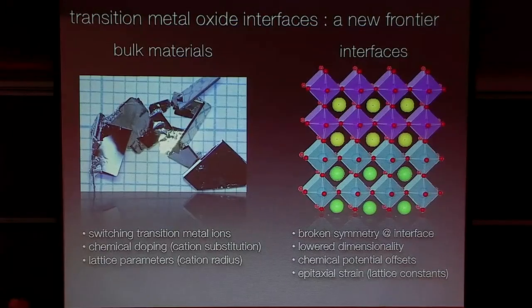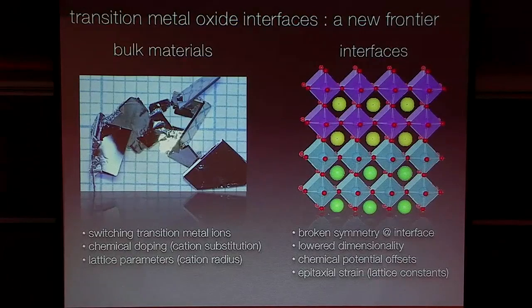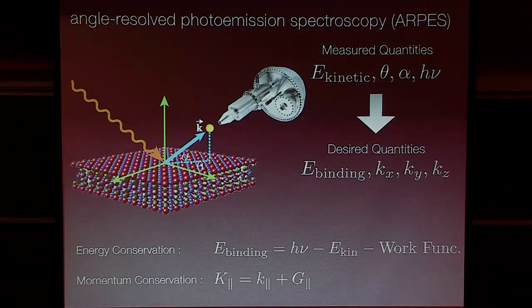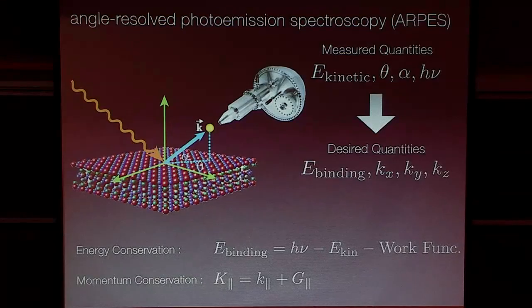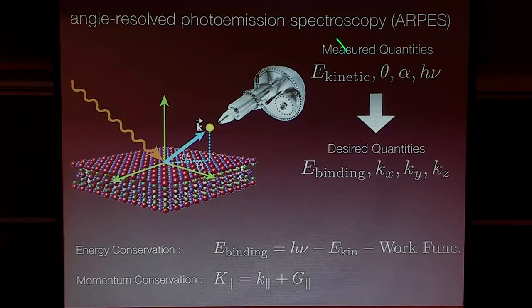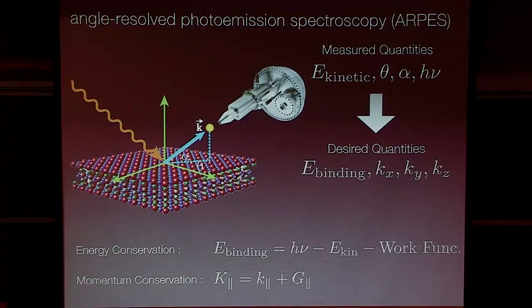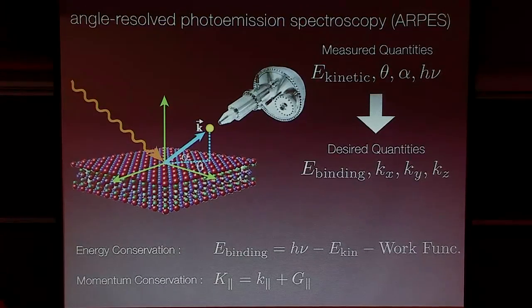At this point, I'm going to switch gears and talk about some of the tools we use to look at the interactions and electronic structure in these systems. We basically use angle-resolved photoemission spectroscopy — this is basically nothing other than just the photoelectric effect. We come in with a beam of monochromatic photons, and we have an electron spectrometer that maps out the speed and direction with which electrons are ejected from the crystal. Using simple energy and momentum conservation relationships, we can back out the energy and momentum quantum numbers of the electron when it was in the solid.